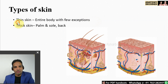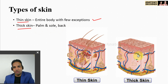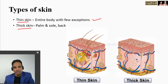The two types of skin are thin skin and thick skin. Thin skin is present all over the body with few exceptions. The exceptions are thick skin regions: the skin of the palm, skin of the sole, and also skin of the back. Sebaceous glands are seen only in thin skin. Sweat glands are more numerous in thick skin and fewer in thin skin.